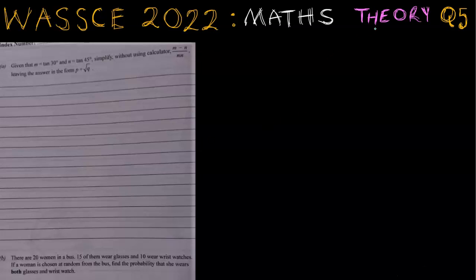In this video, I'm going to be solving theory question 5a and b of WASSCE 2022. The a part says that, given that m equals tan 30 degrees and n equals tan 45 degrees, simplify without using the calculator m minus n over mn.